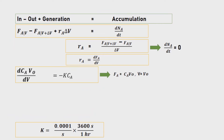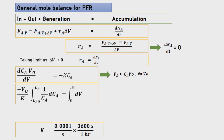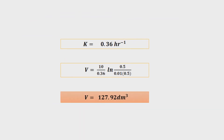For PFR, we again take the limit as delta V approaches zero, and after integration we get V equals V0 over K times ln(CA0 over CA). Substituting the values into this equation, we get 2792 decimeter cubed.